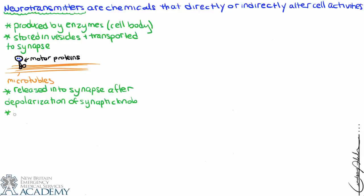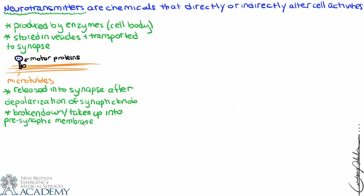Once the neurotransmitter has bound to its receptor, it can be broken down by enzymes, taken back up into the presynaptic membrane, taken up by an astrocyte, or diffuse away from the receptor. So there are lots of options for where it goes next.